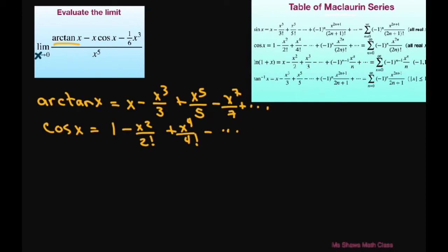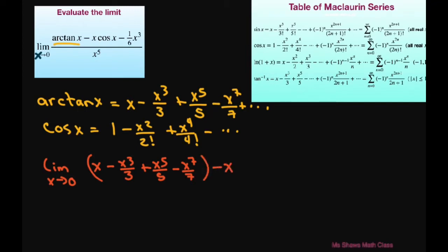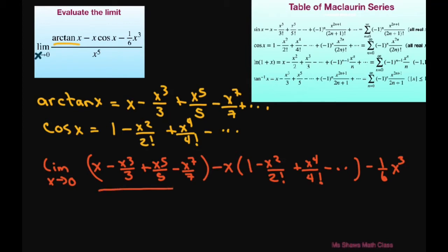Alright, so let's just fill everything in and see what we have. We're going to take the limit as x approaches 0 and substitute our arctan as x minus x cubed divided by 3 plus x to the 5th divided by 5 minus x to the 7th divided by 7. Then we have minus x times our cosine, and the cosine is 1 minus x squared divided by 2 factorial plus x to the 4th power divided by 4 factorial minus dot dot dot. And then we still have our minus 1 divided by 6 times x cubed. And this is all divided by x to the power of 5.